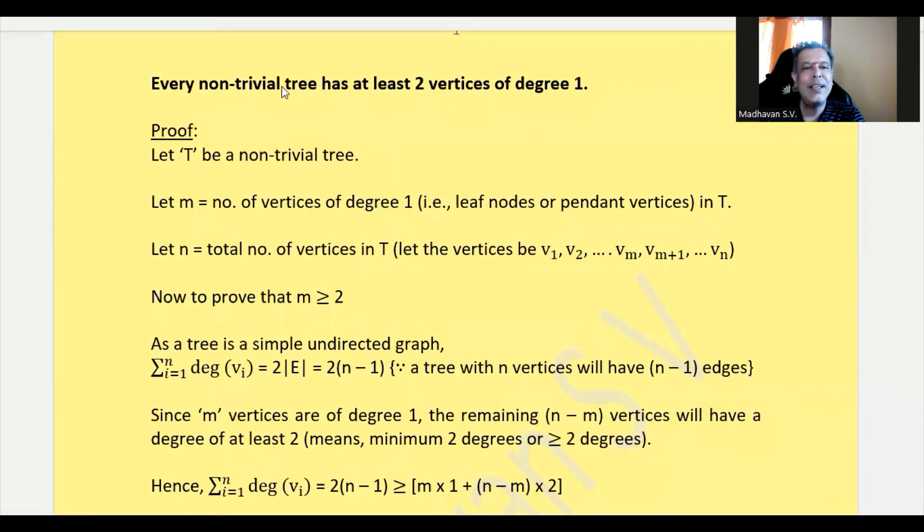Every non-trivial tree has at least two vertices of degree 1. A non-trivial tree means it will have more than one vertex. Let us consider m as the number of vertices of degree 1.